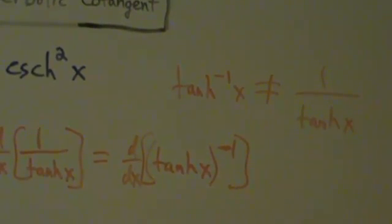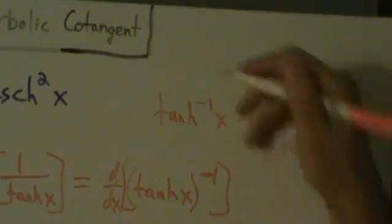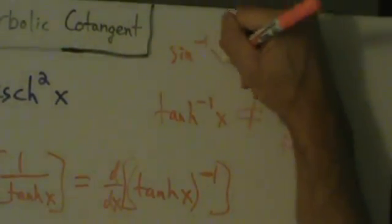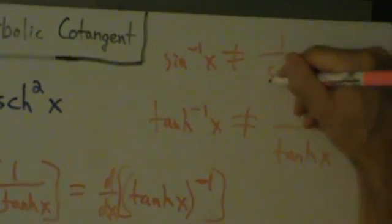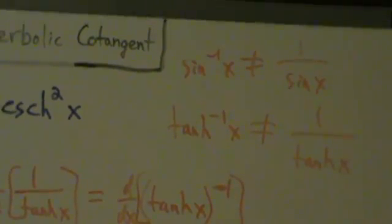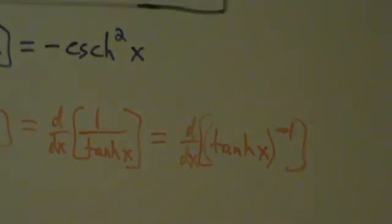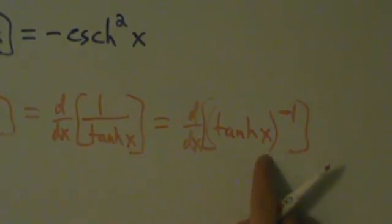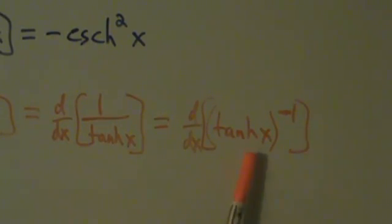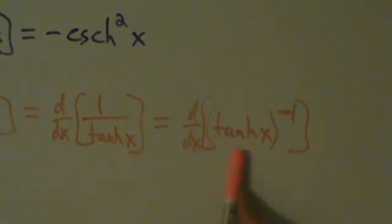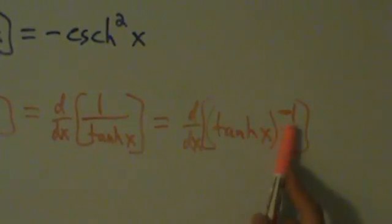It's the same thing with the circular trig functions — inverse sine of x is not the same thing as 1 over sine of x. So you want to be careful with your exponents. Now let's proceed with the chain rule. Starting at x and working outward, the first thing that happens is the hyperbolic tangent, and then we raise it to the negative first power. So the little guy is tanh of x, and the big guy is raising to the negative first power.